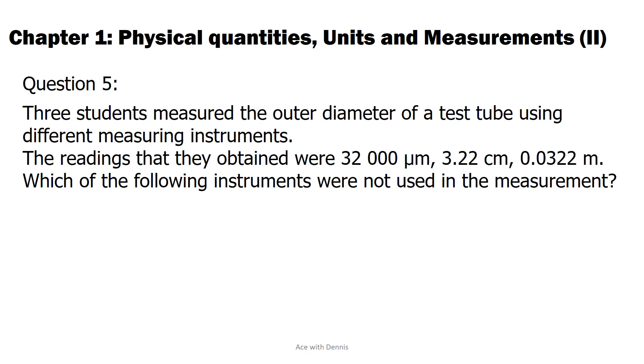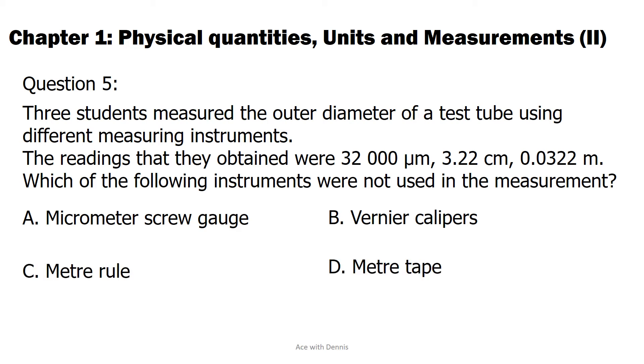Question 5. Three students measured the outer diameter of a test tube using different measuring instruments. The readings that they obtained were 32,000 micrometers, 3.22 centimeters, and 0.0322 meters. Which of the following instruments were not used in the measurement? A. Micrometer Screw Gauge. B. Vernier Calipers. C. Meter Rule. D. Meter Tape.